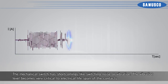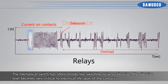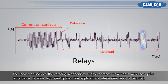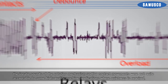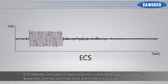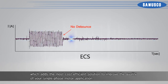The mechanical switch has shortcomings like switching noise or vibration. The vibration level becomes very critical to the electrical lifespan of the contacts because the number of switching sequences for each starting cycle can increase rapidly as the starting time increases. In addition, the innate sounds of the rotating mechanism and/or contact movements were not quite acceptable to some high-quality machine applications where quietness is required. ECS operates only once in every starting cycle without contact movement, guaranteeing minimal switching noise and/or electrical noise, which adds the most cost-efficient solution to improve the quality of your single-phase motor application.